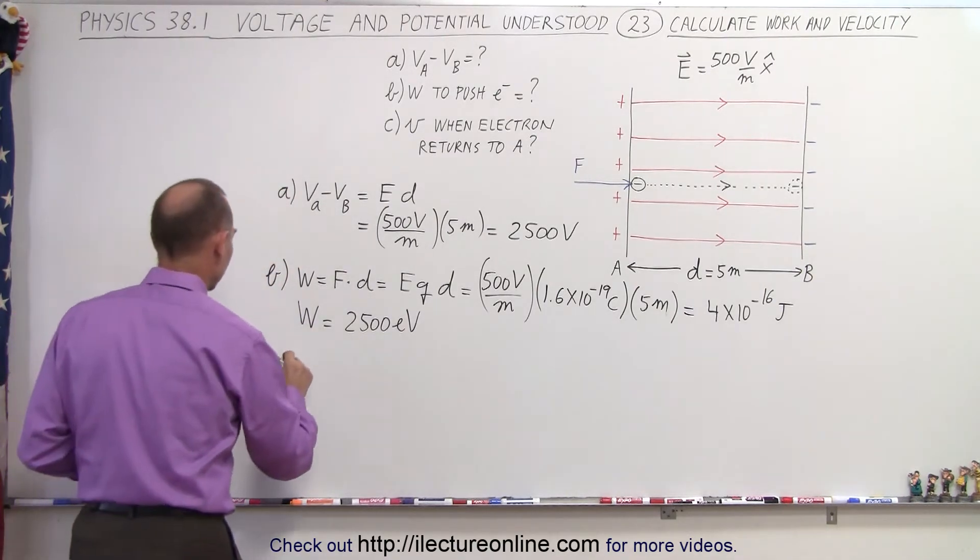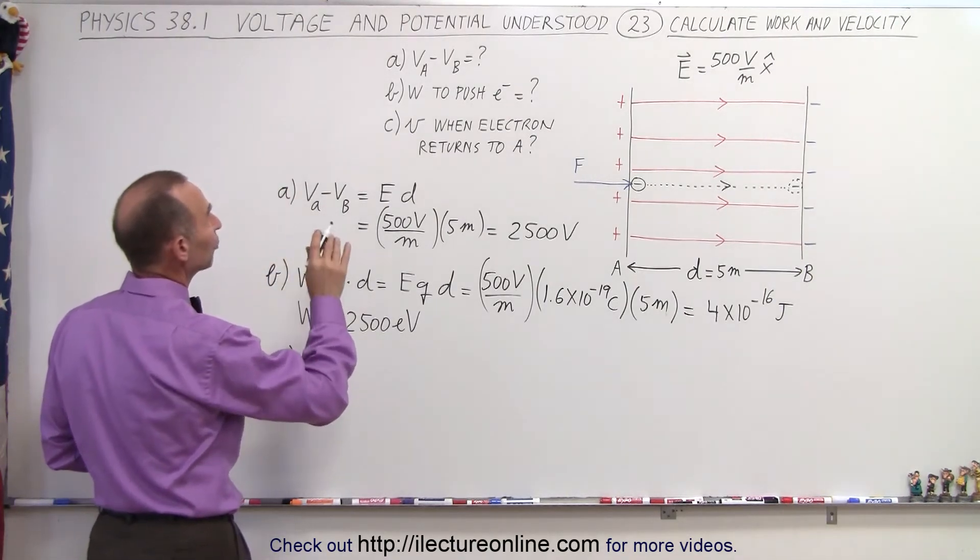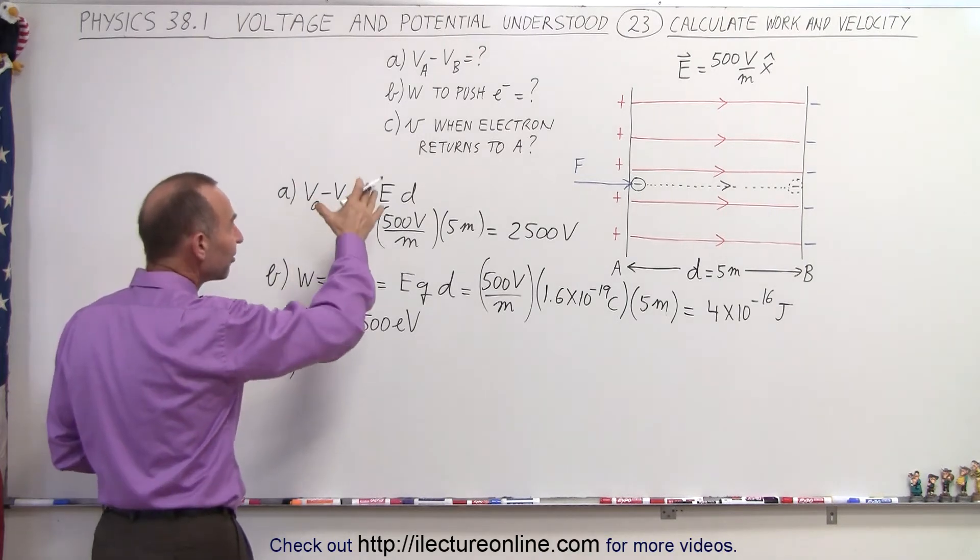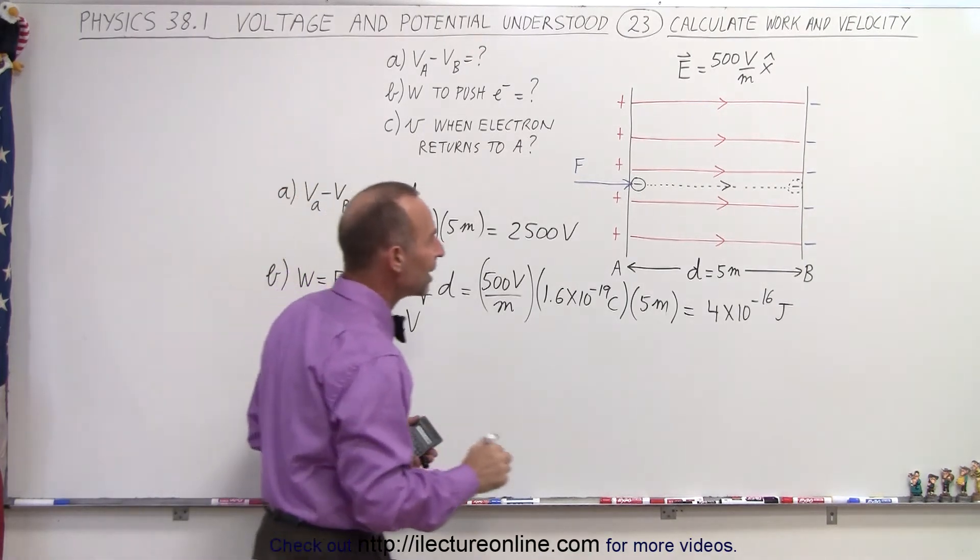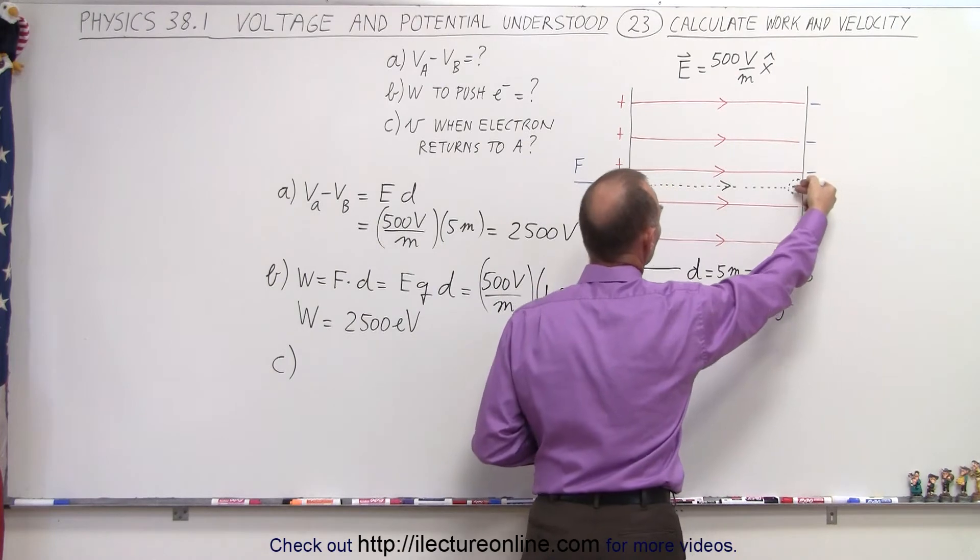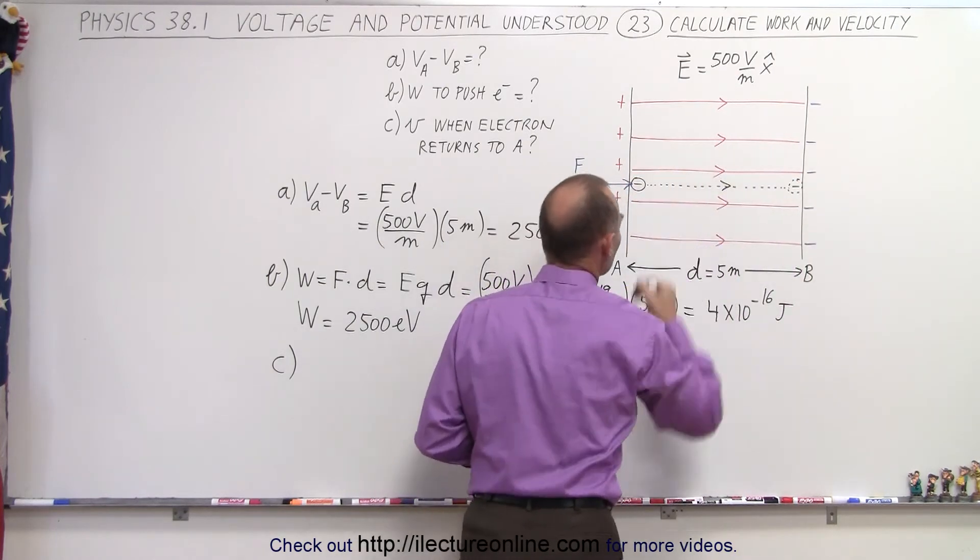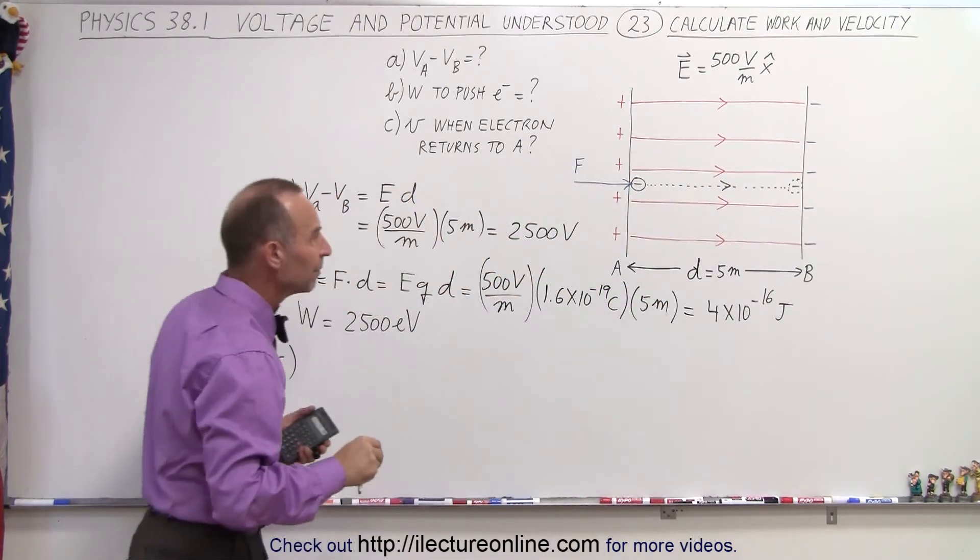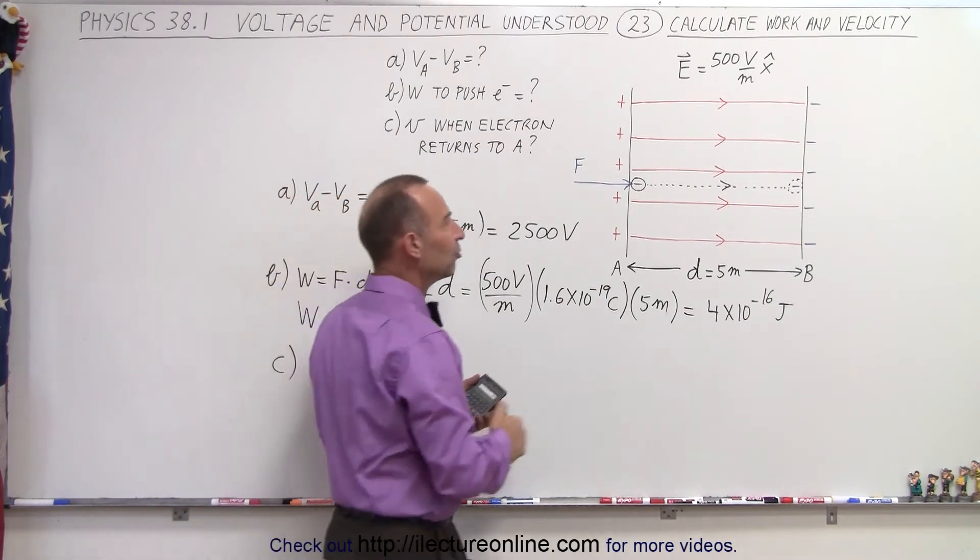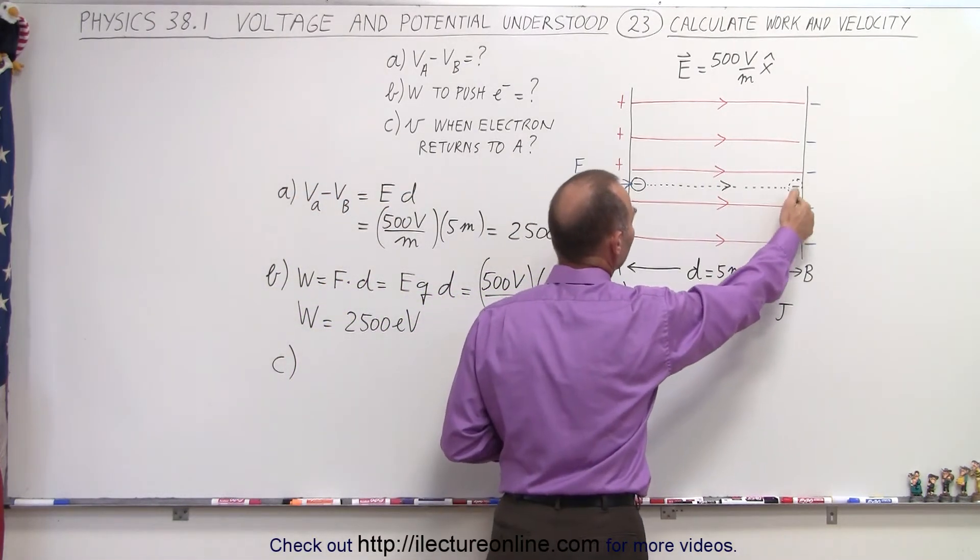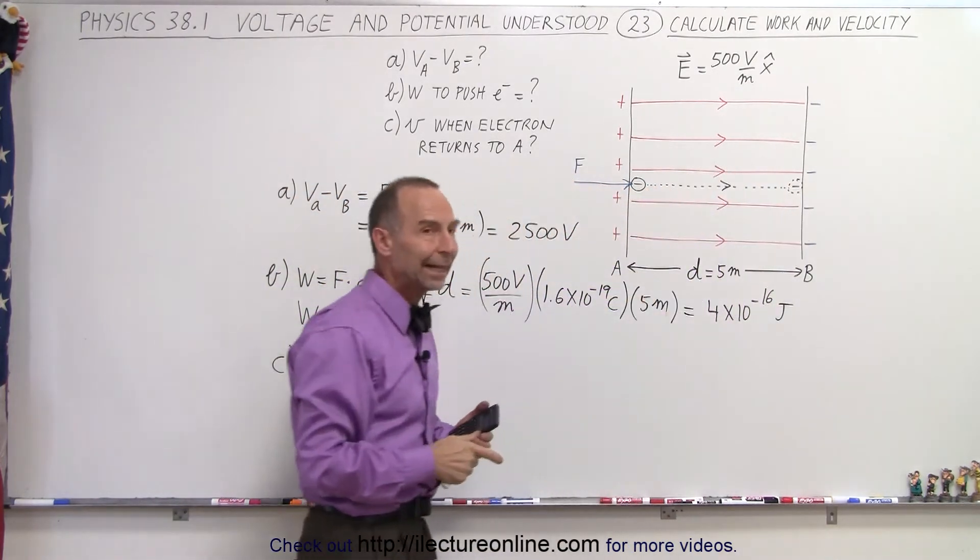Finally, for part C, we have the velocity when the electron returns to A. So now if we let the electron go, it will zip back across, and when it gets to the other side, what will be its speed? Well, that means that all the potential energy gained by the electron will then be converted back into kinetic energy.